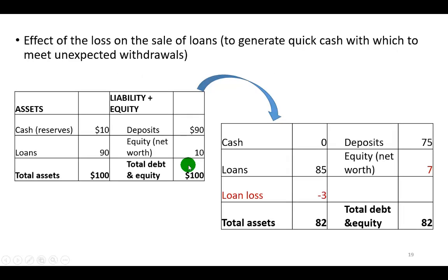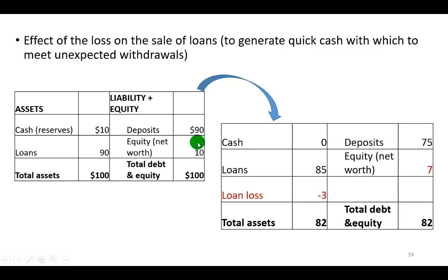For example, to get the extra 5 million bucks, the bank might go ahead and sell 8 million dollars of its loans, but that leads to a loss of 3 million. The bank must then write off the loss of 3 million against its equity, so that with a starting equity balance of 10 million, the loss of 3 million on the fire sale leaves the bank with an ending net worth of 7 million.